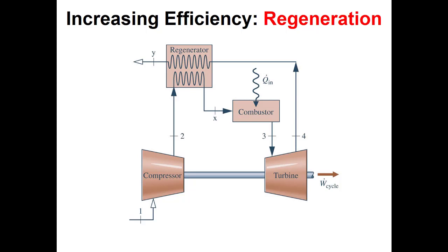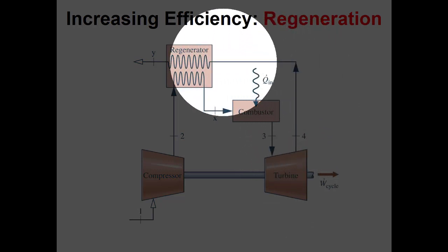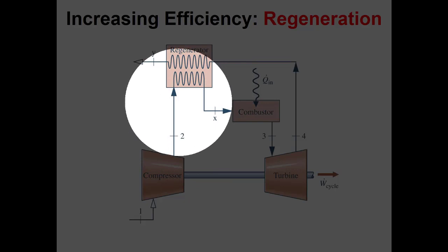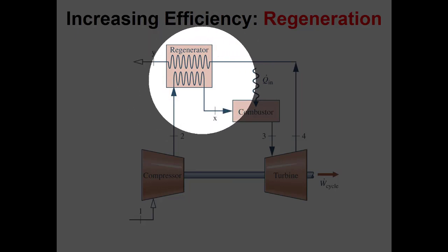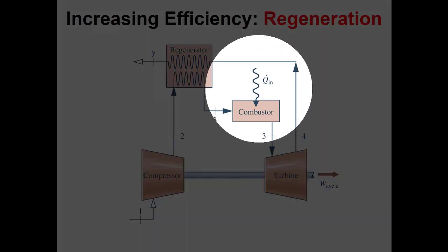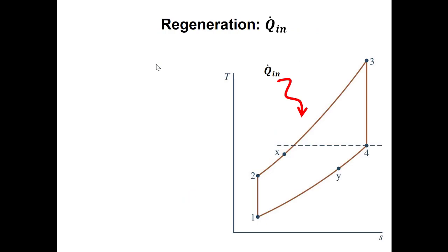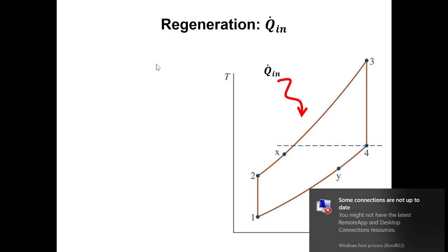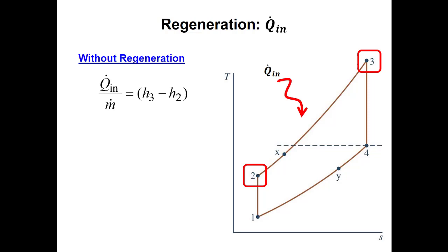We then talked about how to improve efficiency in Brayton cycles. The first way was adding regeneration. In regenerative cycles, exhaust air that is relatively hot compared to the fluid coming out of the compressor is used to preheat the compressed air before it goes into the combustor. This reduces the amount of heat we put into the cycle and decreases the exhaust temperature — both advantageous.